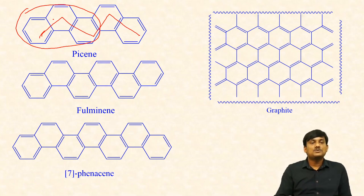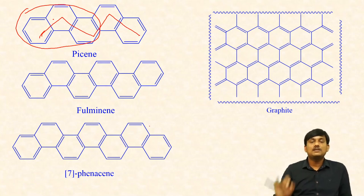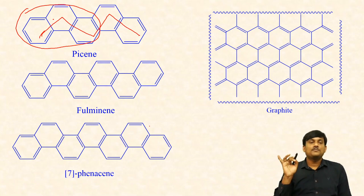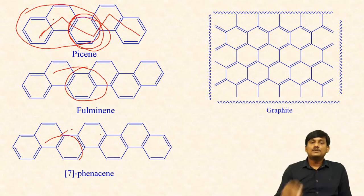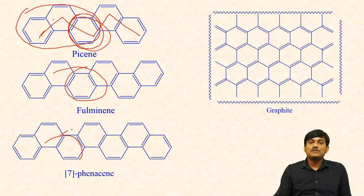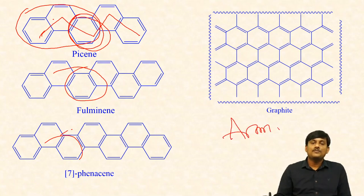And fulminene: one, two, three, four, five, six. And in seven-phenacene, you can find seven benzene rings. If you take the middle benzene ring — this is the complete benzene ring — this one is more aromatic than benzene. And if you take graphite, in graphite you have benzene units, which are also polycyclic aromatic hydrocarbons. Graphite is also aromatic.